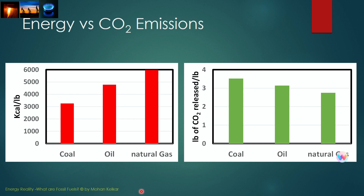Because coal contains more carbon than hydrogen, burning one pound of coal generates a lot less energy than burning one pound of natural gas. As you can see from the figure, coal generates about 3,200 kilocalories per pound, oil generates about 4,700 kilocalories per pound, and natural gas generates about 6,000 kilocalories per pound.